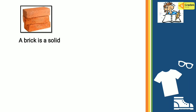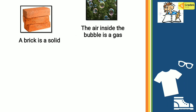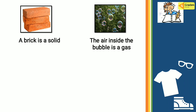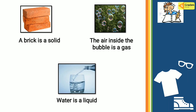Picture number one: a brick is a solid. Examples of solid include glasses, table, pencil, and others. Picture number two: the air inside the bubble is a gas. Other examples of gas include oxygen, carbon dioxide, and helium. The next picture shows an example of liquid. Water is a liquid. Other examples of liquid include ketchup, slime, syrup, and others.